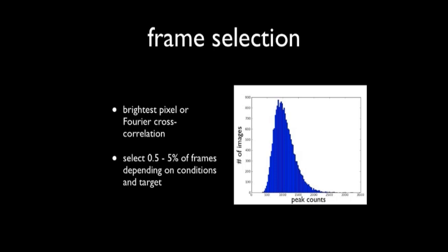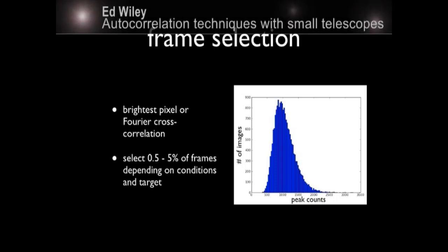Like I said, you just select the best 0.5 to 5% of the frames, depending on the conditions and the brightness of the targets and such. This plot shows a histogram of the maximum counts. This is when I just choose the maximum pixel. And then the number of images at each of those peak counts. So peak counts is along here. If you select 1%, you're only looking at this region of the images, and you have a huge amount that you're wasting. That's the nature of lucky imaging.